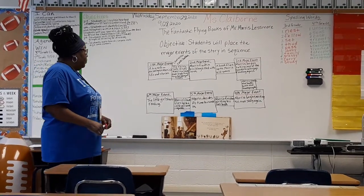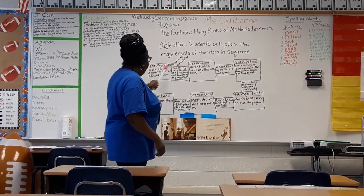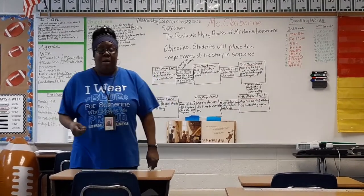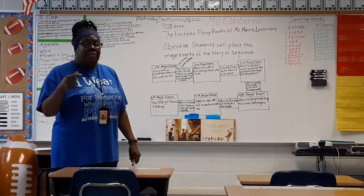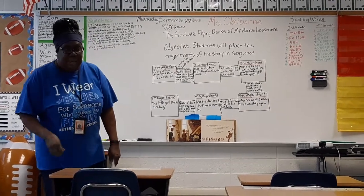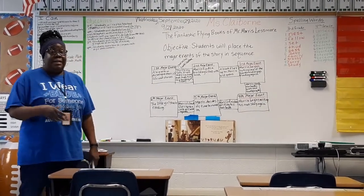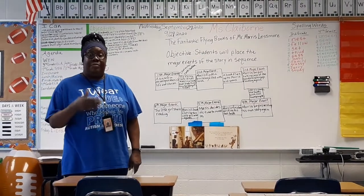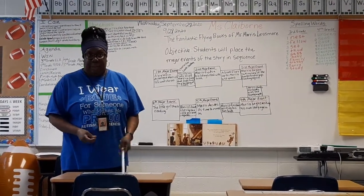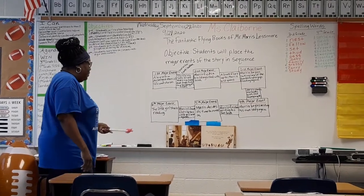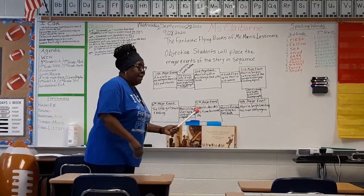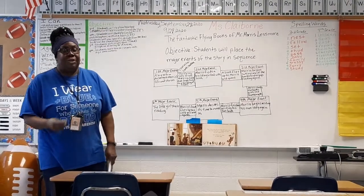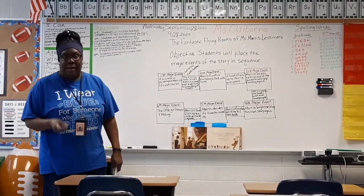From the three major events we've talked about, we can infer that Morris is actually in a library. In the context of the book, it does not say that he's in a library — they just say it's a building. But by the different context clues and the illustrations in the book, it leads us to know that it's actually a library.